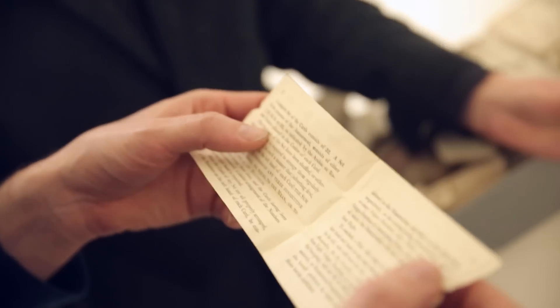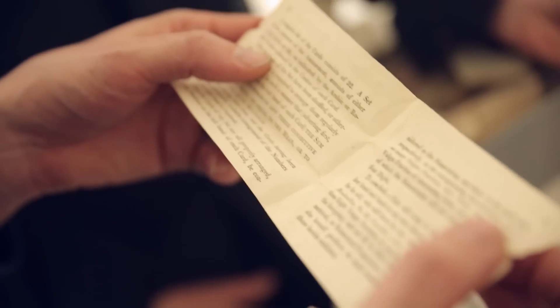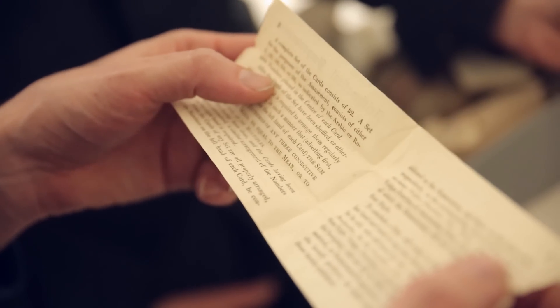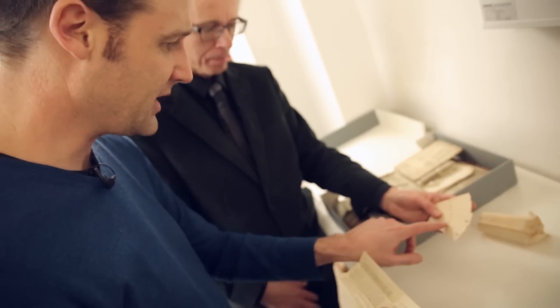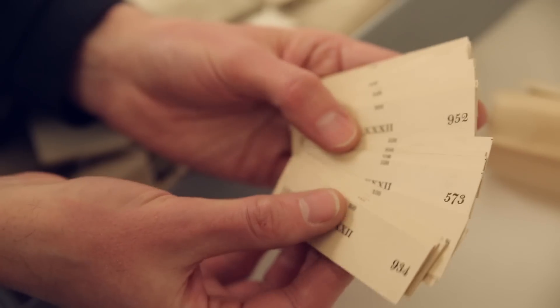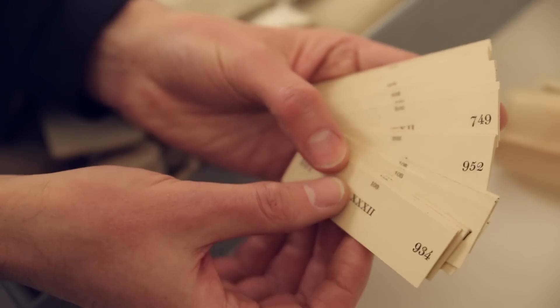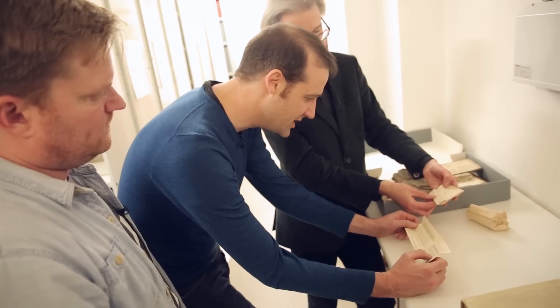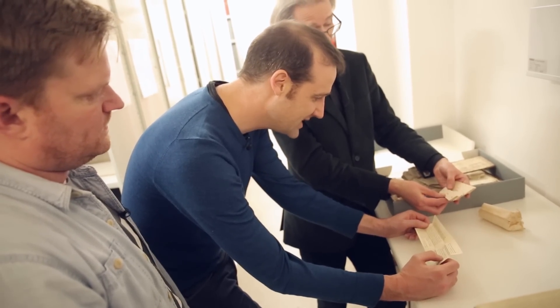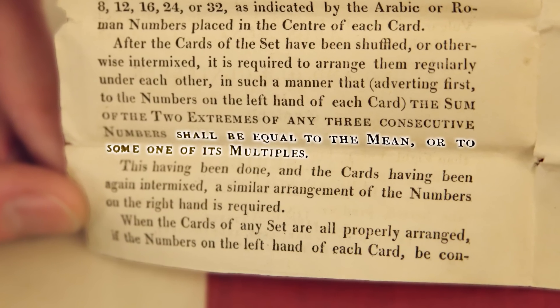A set for the purposes of amusement consists of either 8, 12, 16, 24 or 32, as indicated by the Arabic or Roman numerals placed in the centre of each card. So it's got 32 in the middle. And then 108. Oh, they've all got 108 at the top. It is required to arrange them regularly under each other in a manner such that the sum of the two extremes of any three consecutive numbers shall be equal to the mean or to one of its multiples. That's not keeping it easy, is it? I love this. Off you go.